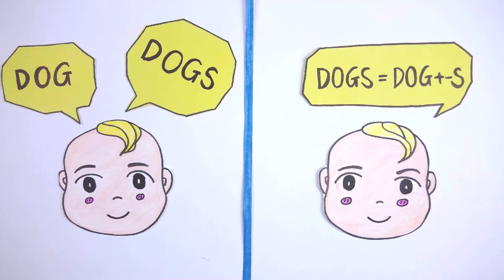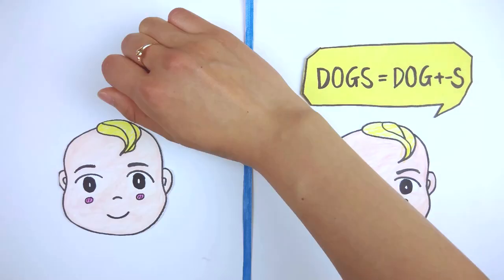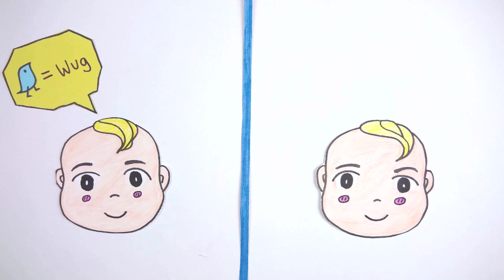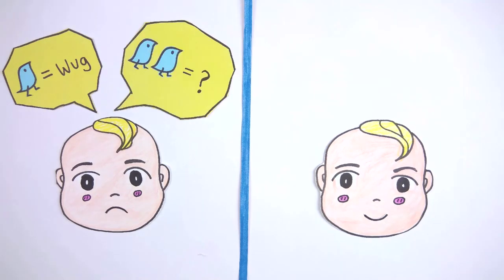If children learn the morpheme by memorization, when they encounter a nonce noun like WUG, a made-up bird, they may not be able to generalize the rule to them and use the plural WUGS form, as the words WUG and WUGS are independent, and they need to encounter the plural form WUGS to know the word.